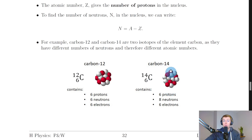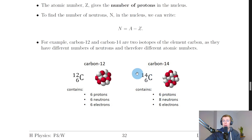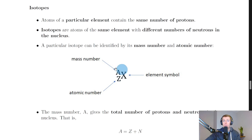For carbon-14, we again use the element symbol C, with atomic number 6 — the number of protons in the nucleus. The mass number is the total protons and neutrons, so we add 6 and 8 to get 14. Using this notation we're able to describe and identify different isotopes.